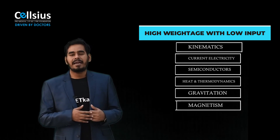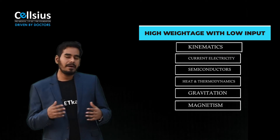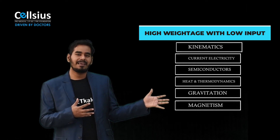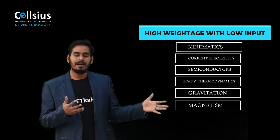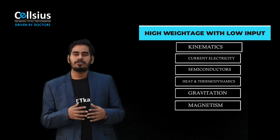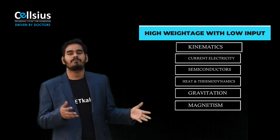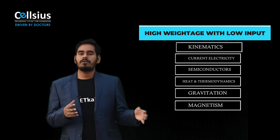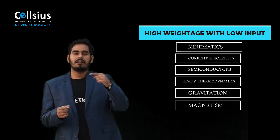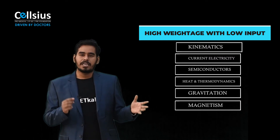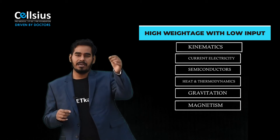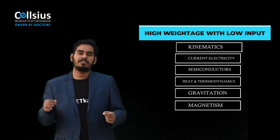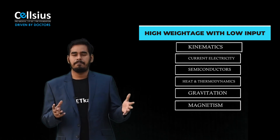Next is magnetism. The entire magnetism chapter is large, but focus on the first three parts: sources of magnetic field, forces on a moving charged particle, and Earth's magnetism. You can score very easily because questions are formula-based — such as the magnetic field at the center of a circular wire, arc, or square, and Ampere's circuital law.